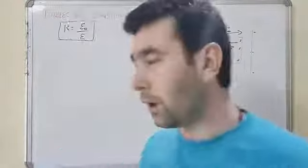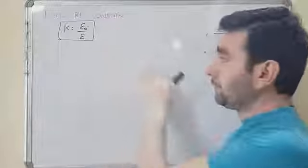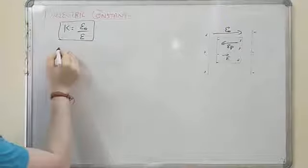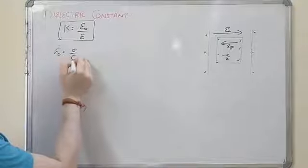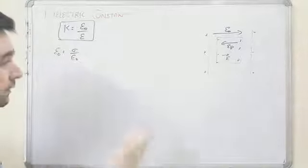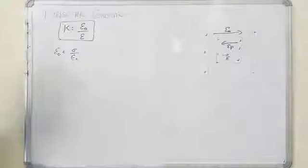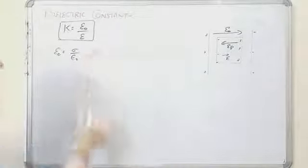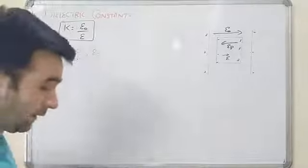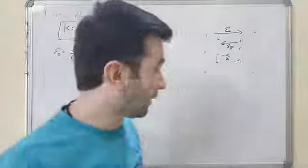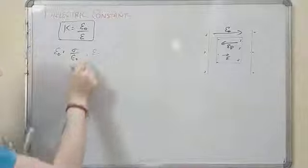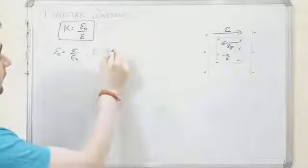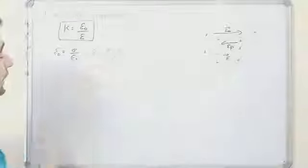We can also express the dielectric constant in terms of surface charge density. We know that E₀ = σ/ε₀, where σ is the surface charge density on the plates. Similarly, the net electric field E = (σ - σₚ)/ε₀, where σₚ is the induced surface charge density.